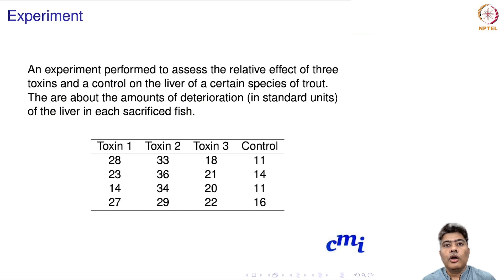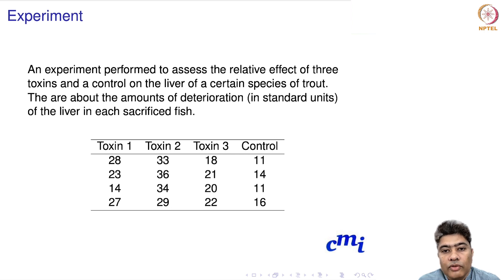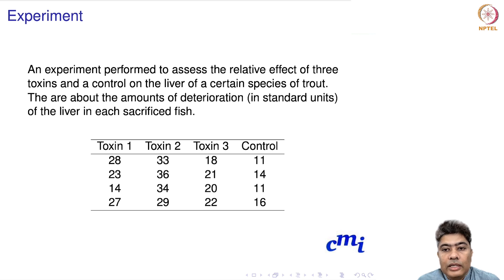First we will consider an experiment. Suppose an experiment is performed to assess the relative effect of three toxins and a control on the liver of a certain species of trout. Trout is a particular fish species, and the effect of toxin on that particular fish is being studied — specifically amounts of deterioration in standard units of the liver in each sacrificed fish.